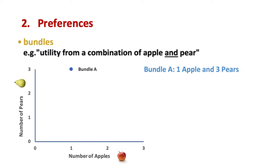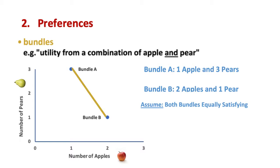You also have another choice, or bundle B, where you can have two apples and one pear. These two bundles are shown in the diagram. Assuming these two bundles provide you with the same level of utility, then the line that joins these two points together is called the indifference curve. Note, we use the word curve very loosely here, where even a straight line is called a curve.